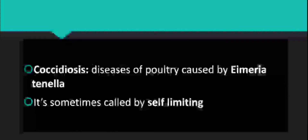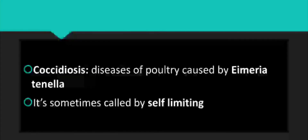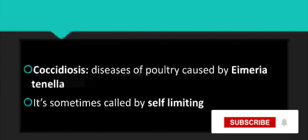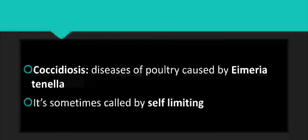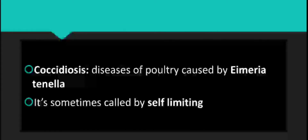When chickens ingest feed that has been mixed with contaminated droppings, that is how they get infected. It is called self-limiting because of two things: first, the amount of eggs or cysts that have been ingested by the chickens, and second, the immune system of the chicken. The stronger the immune system, the more the chickens can cope.